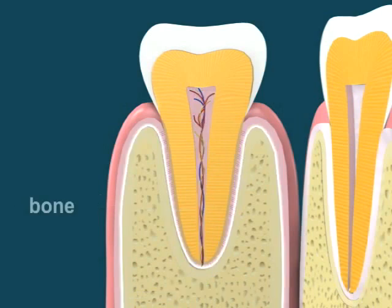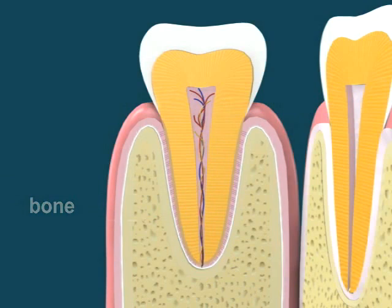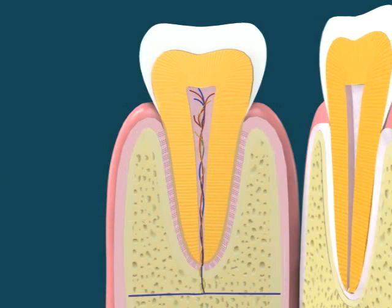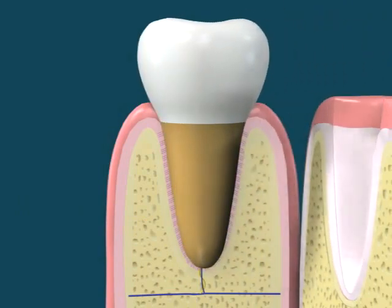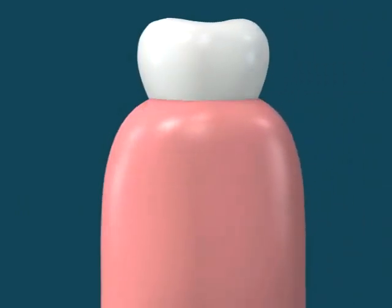The alveolar bone is the bone of the jaw which forms the alveolus around teeth. Like any other bone in the human body, alveolar bone is modified throughout life.